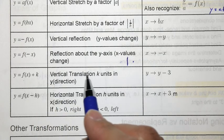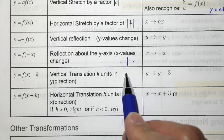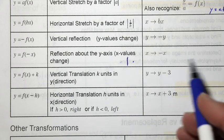Here, y equals f of x plus k is a vertical translation, k units in the y direction. So if k is positive, it's going to move up. If k is negative, it's going to move down. So here's a replacement.